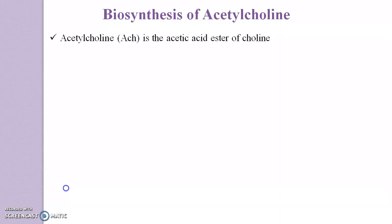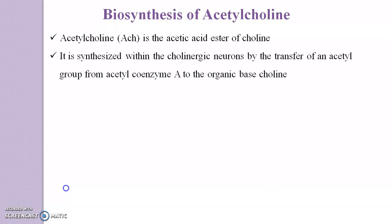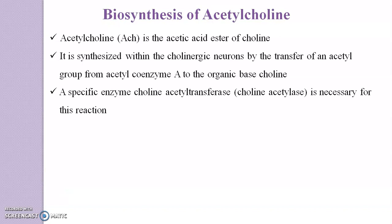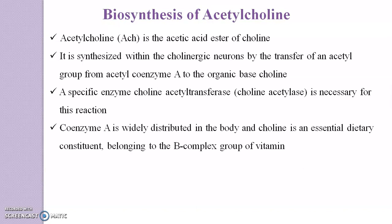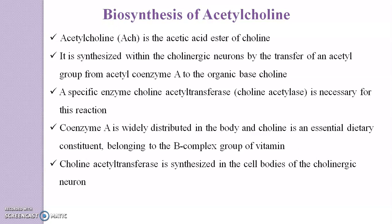Let's begin with a few points regarding the biosynthesis of acetylcholine. Acetylcholine is the acetic acid ester of choline. It is synthesized within the cholinergic neurons by the transfer of an acetyl group from acetyl coenzyme A to the organic base choline. Coenzyme A is widely distributed in the body, and choline is an essential dietary constituent belonging to the B complex group of vitamins.